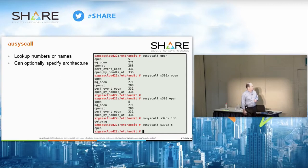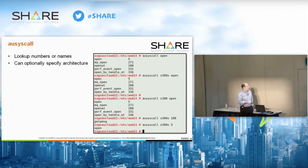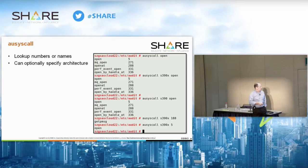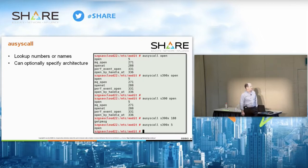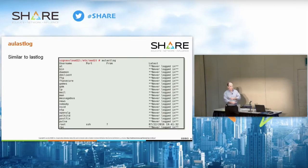The ausyscall command was mentioned earlier. Here we're not supplying the hardware architecture, so it defaults to the current system. I have two examples for s390 and s390x. Passing in a syscall number returns the syscall name, and passing in the number 5 returns 'open.' It works both directions — name or number.